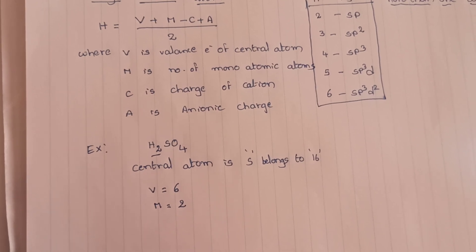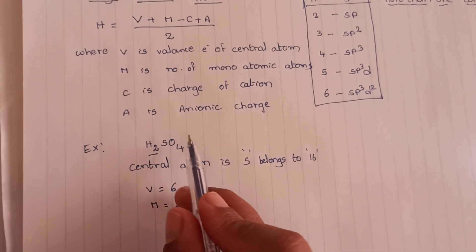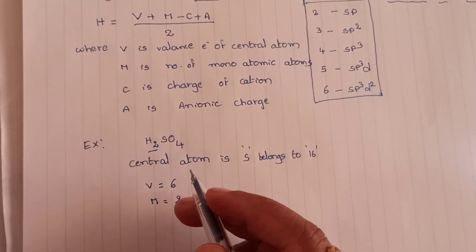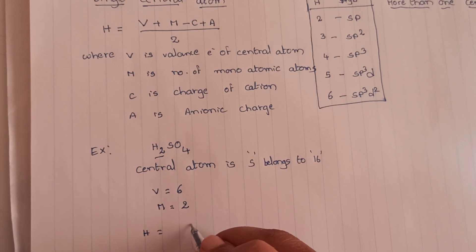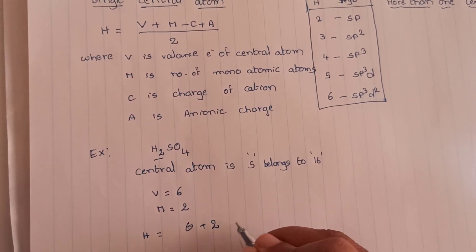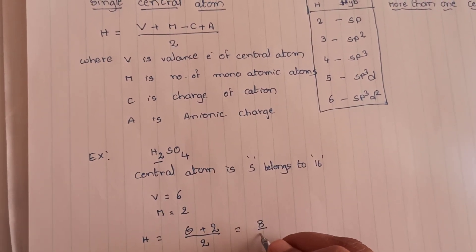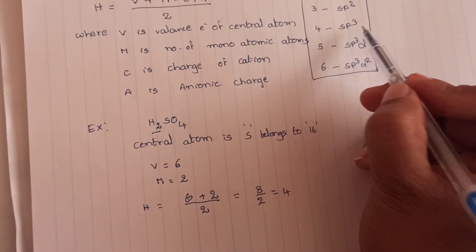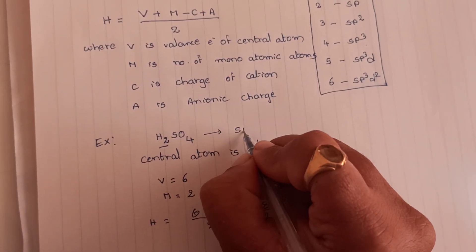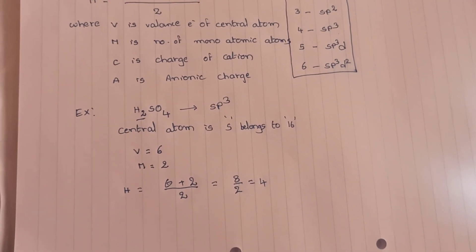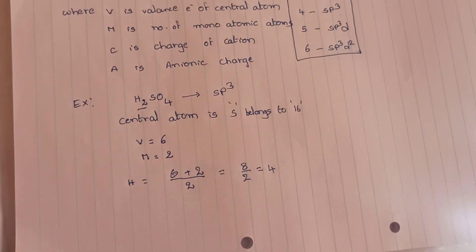Next we determine M. How many monoatomic atoms do we have? Hydrogen can bind through a single bond, so M is 2. Is there any cationic charge? No. Is there any anionic charge? No, because it is a molecule. So hybridization number equals V plus M divided by 2, that is 6 plus 2 equals 8 divided by 2, equals 4. So the hybridization is SP3.